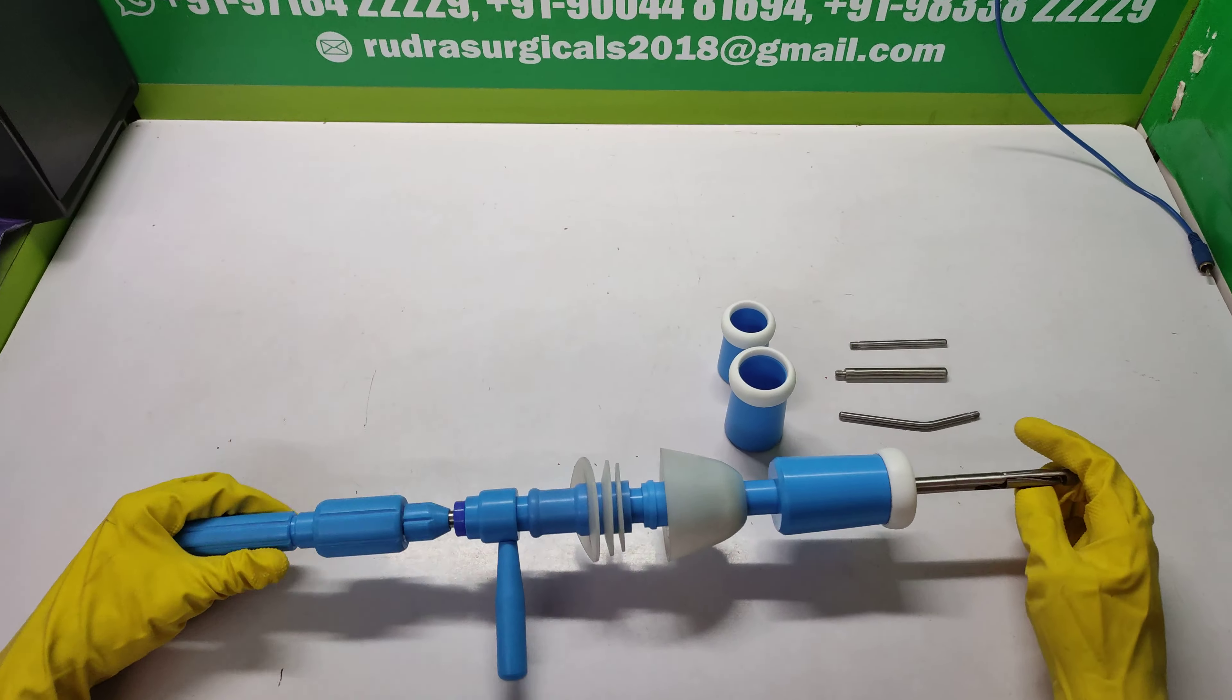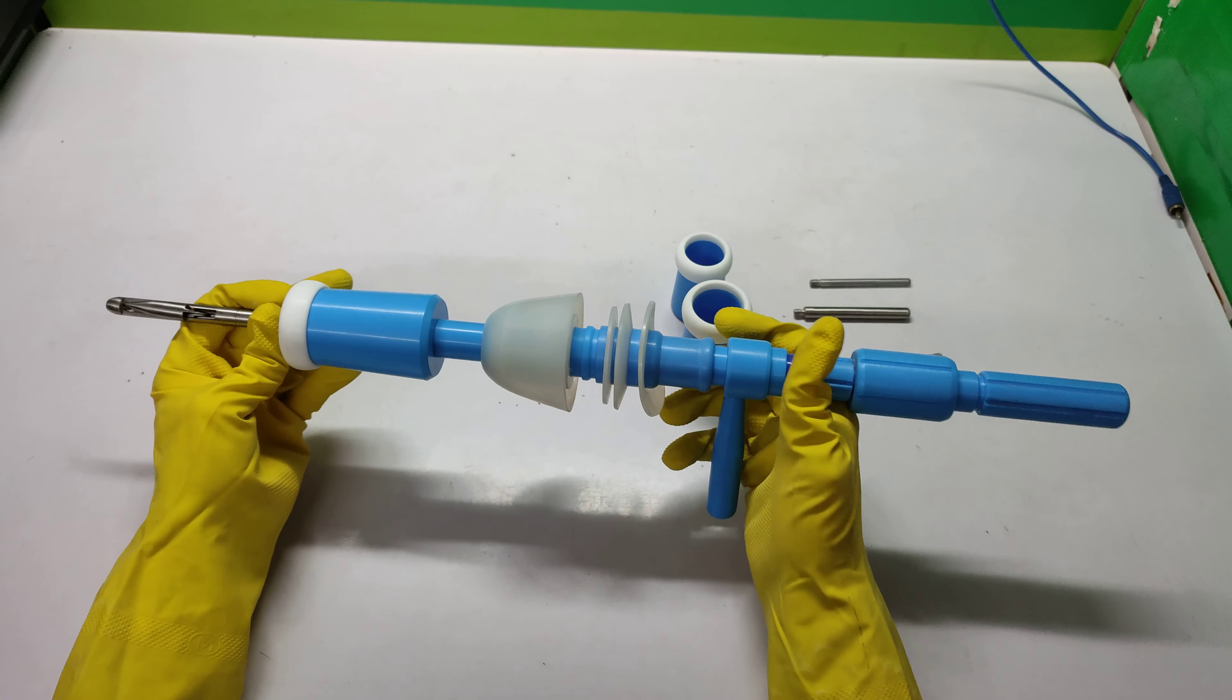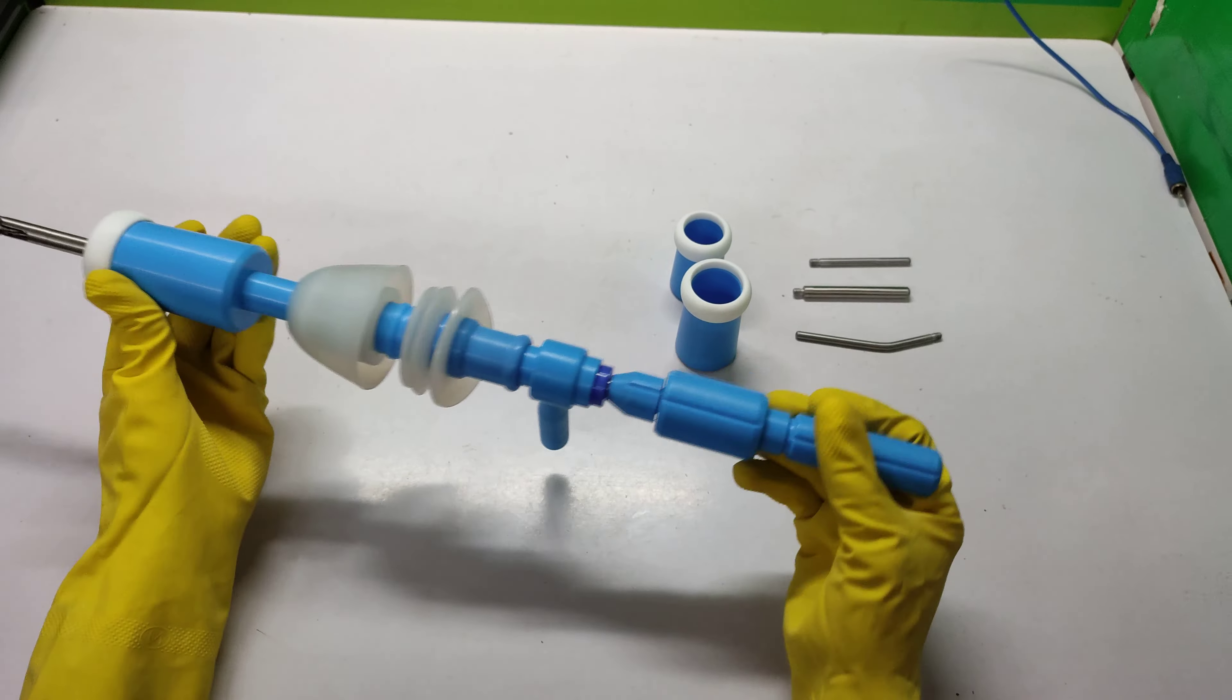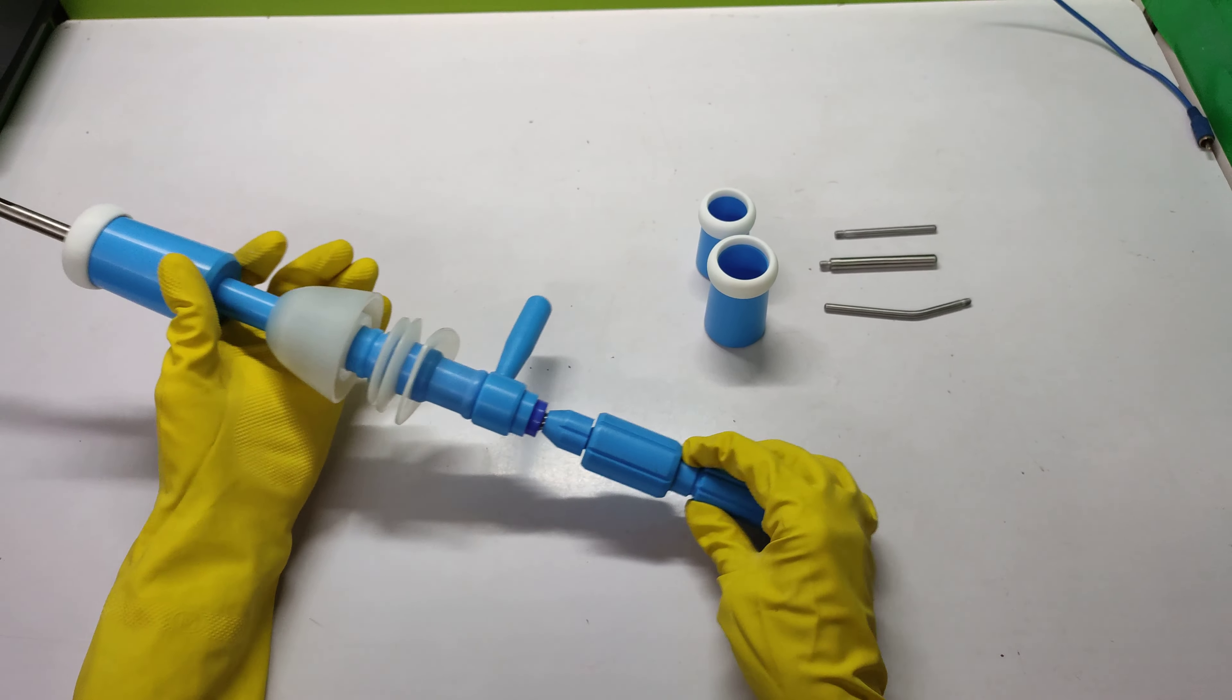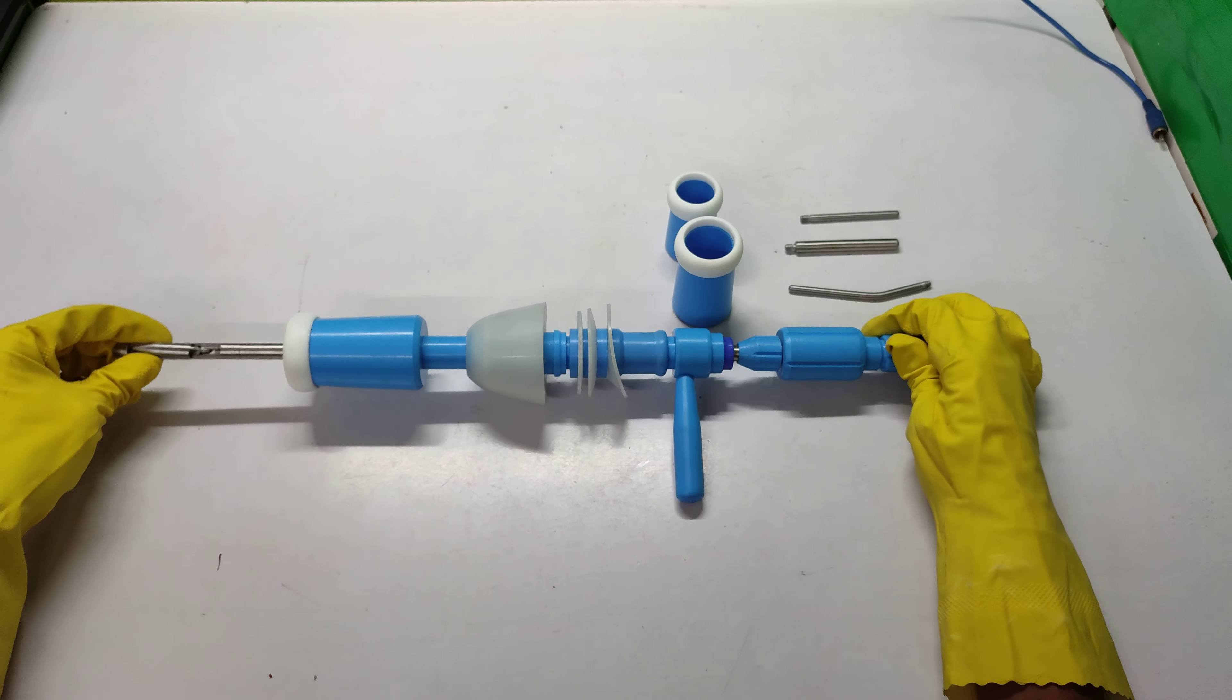This is a uterine manipulator, 330ml, with 3 cups: large, medium and small. Stainless steel materials, reusable.